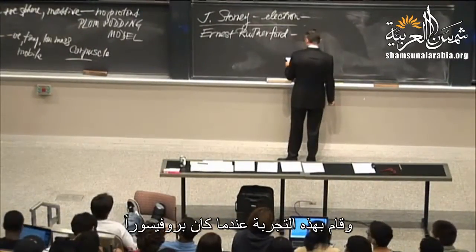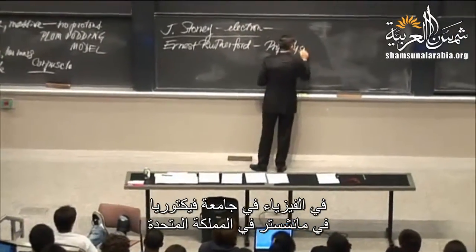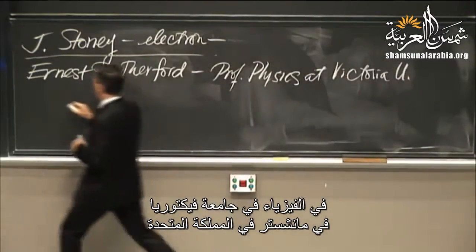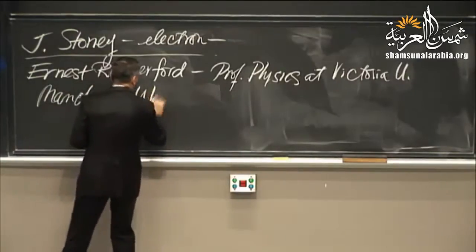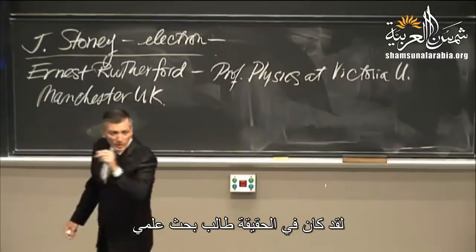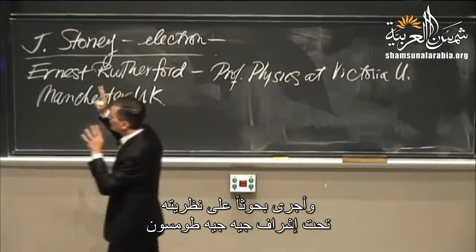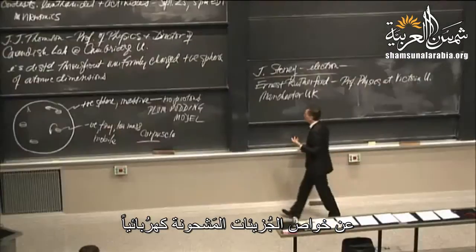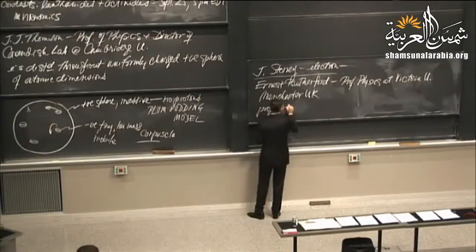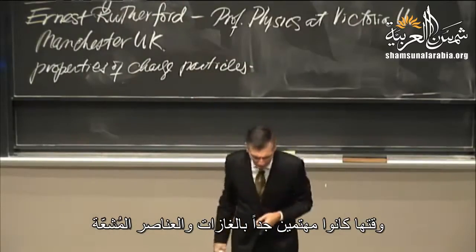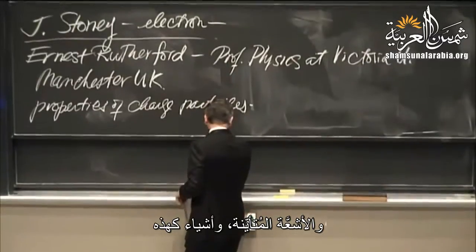Rutherford was a professor of physics at Victoria University in Manchester, UK. He came out of New Zealand on a scholarship to study at Cambridge, where he was a research student for J.J. Thomson. His thesis research was about the properties of charged particles. The Cavendish lab was a beehive of activity. During his PhD he came to understand both the alpha particle and the beta particle.